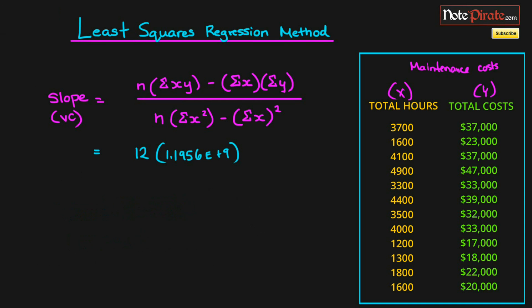We're going to subtract the sum of x, so adding up all these values gives us 35,400, and the sum of y, adding up all of those, gives us 358,000.